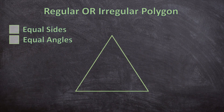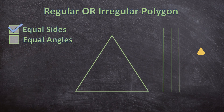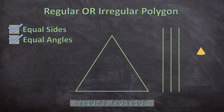Let's look at this triangle's sides first. They are equal, so we can tick the first box — it has equal sides. Now let's look at the angles. They are also equal, so we can tick the second box as well. Because this triangle has both equal sides and equal angles, it is a regular polygon.